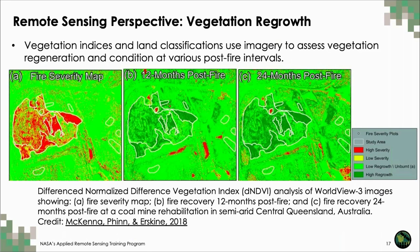In remote sensing assessments of vegetation regrowth, we typically use vegetation indices and land cover classification methods to assess the presence and health of vegetation over time post-burn. I provided an example of a study which used the Normalized Difference Vegetation Index, or NDVI, to assess post-fire vegetation recovery at coal mine rehabilitation sites in central Queensland, Australia. Researchers used a difference NDVI, or DNDVI, subtracting 12-month and 24-month post-fire NDVI estimates from post-fire NDVI measured immediately after burning, providing a metric for vegetation regrowth.